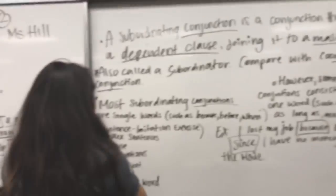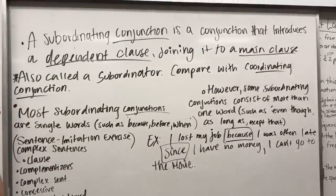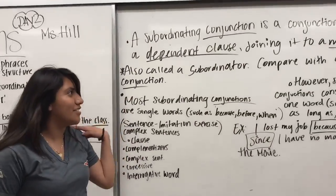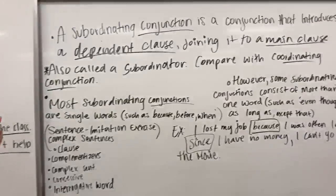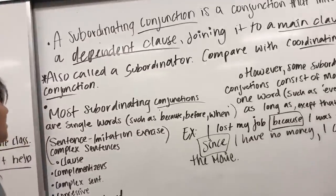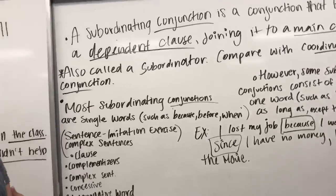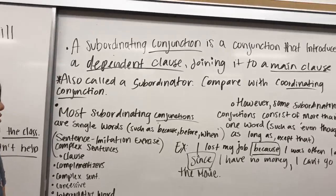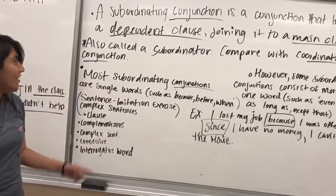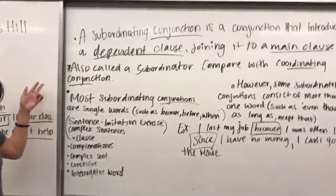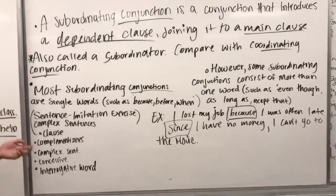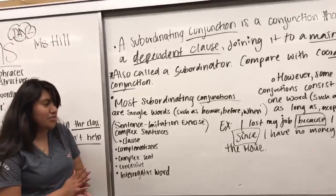Subordinating conjunctions: a subordinating conjunction introduces a dependent clause, joining it to a main clause, and is also called a subordinator. Compared to coordinating conjunctions, most subordinating conjunctions are single words, such as 'because,' 'before,' and 'when.'